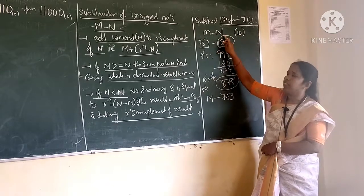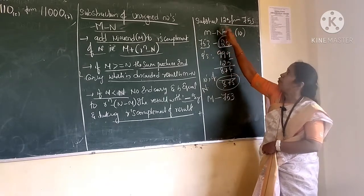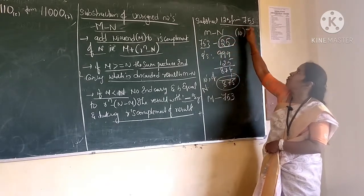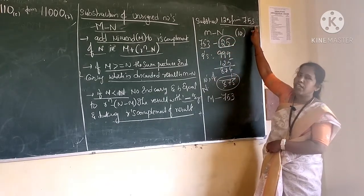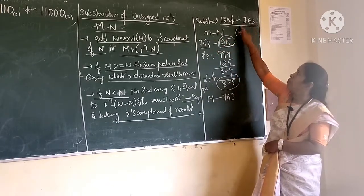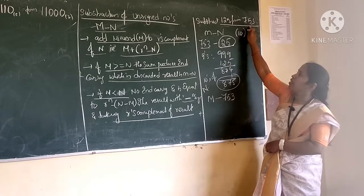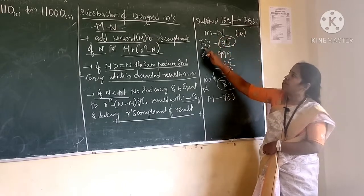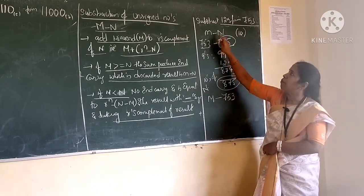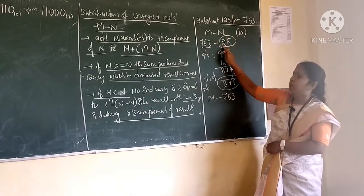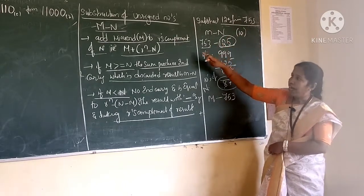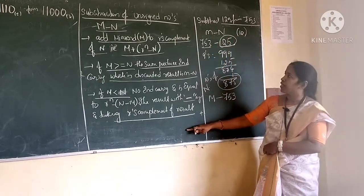Here, m minus n — subtract 125 from 753. So, 'from' means this will be m. 753 is m, and n is 125. I told here the steps.